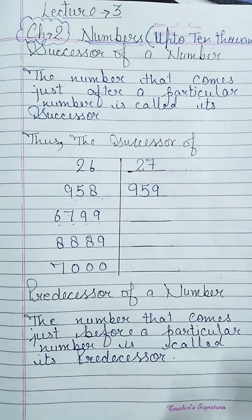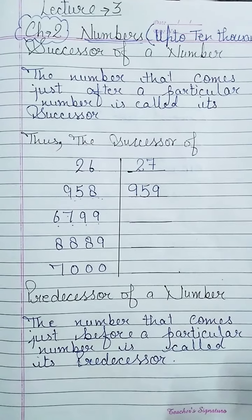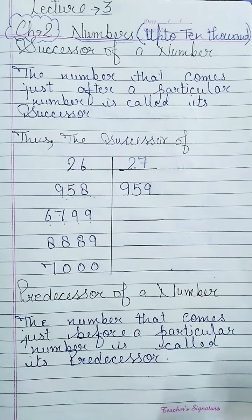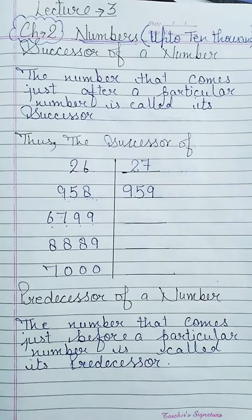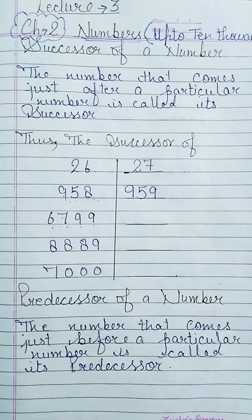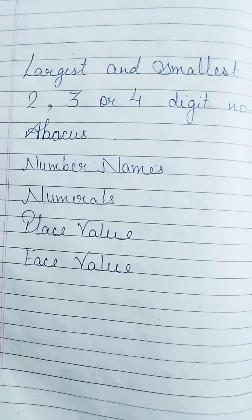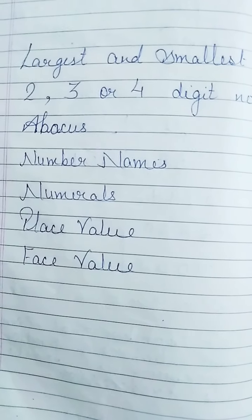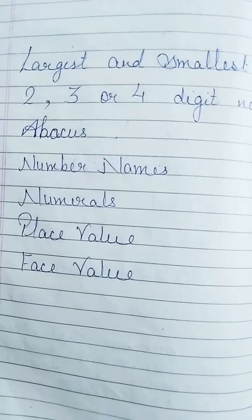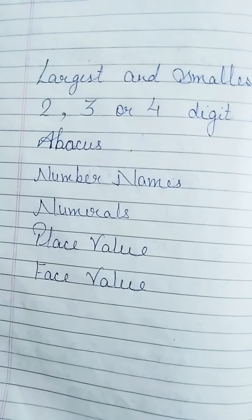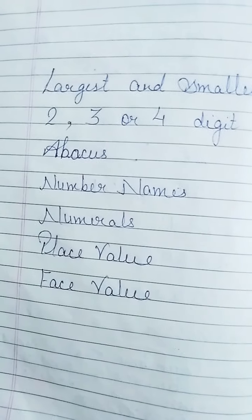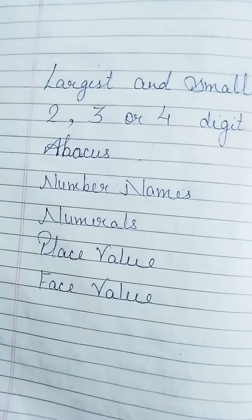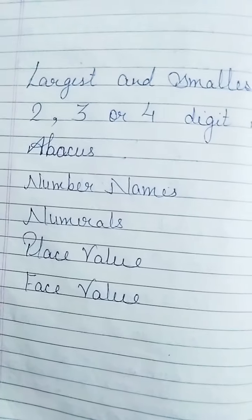Good morning, I am Kirithi Dhawan. I am going to explain chapter number 2, numbers up to 10,000. It's lecture number 3. In lecture number 1 and 2, I have already taught you largest and smallest 2, 3 and 4 digit numbers, abacus, number names, numerals, place value and place value in previous classes. If you didn't watch those videos, please watch on my YouTube channel or with the help of the link that I have sent you.